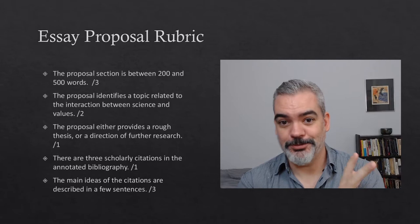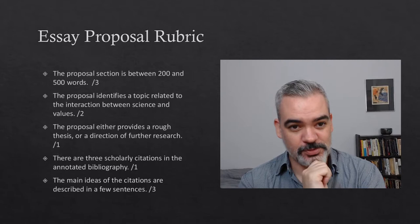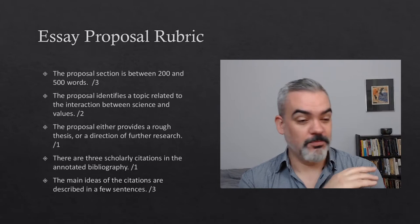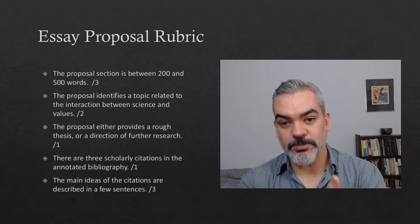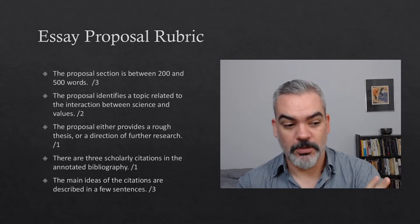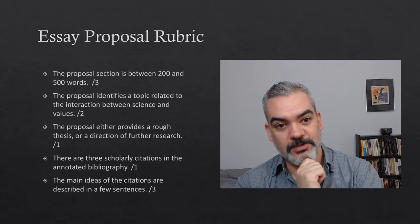You get three marks for the proposal section being between 200 and 500 words — did you propose something and did it take between 200 and 500 words? The proposal should identify a topic related to the interaction between science and values. Is this topic broadly in the ballpark of what this course has been about? If you have any doubts, you can get in touch with me or your TAs. I'll give a couple more comments at the end when we're talking about the final essay itself.